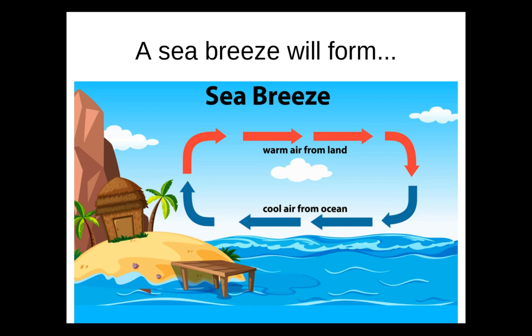A sea breeze describes wind that blows from the ocean inland towards land. This breeze most often occurs in the spring and summer months because of greater temperature differences between the ocean and nearby land, particularly in the afternoon when the land is at maximum heating from the sun. During the day, the sun heats up both the ocean surface and the land. Water is a good absorber of the sun's energy, but water heats up much more slowly than the land.